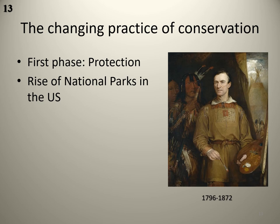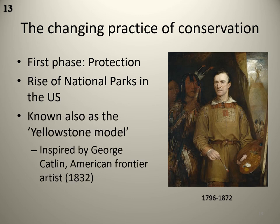Conservation initiatives have gone through different phases reflecting our evolving understanding of the relationship between the environment and humans. The first phase was strict protectionism — protect nature, keep people out — which led to the rise of national parks in the U.S. This 'fines and fences' model, also known as the Yellowstone model, was inspired by American frontier artist George Catlin. Under the Yellowstone model, settlement is prohibited and both subsistence and commercial resource use are banned, based on the idea that humans aren't part of wild landscapes and must be kept separate.